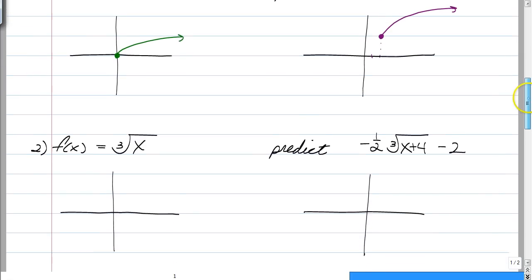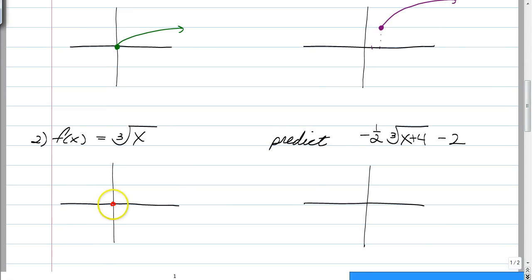Cube roots. Cube roots typically look like this. The reason they go negative for the X and Y is because you are allowed to take the cube roots of negative numbers.